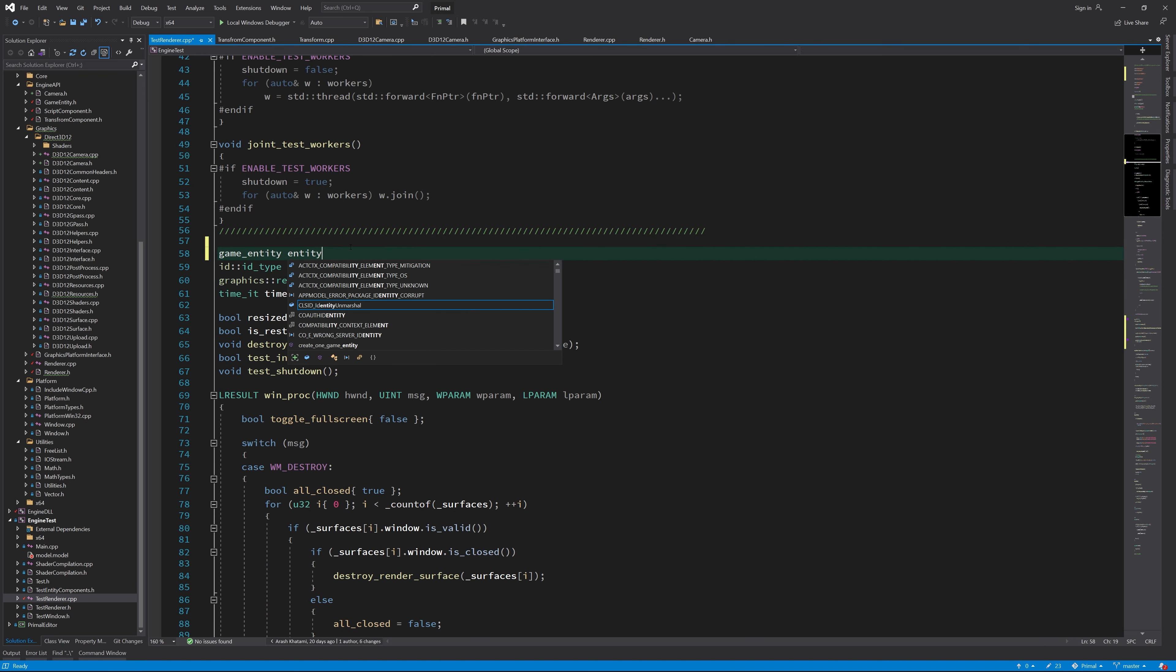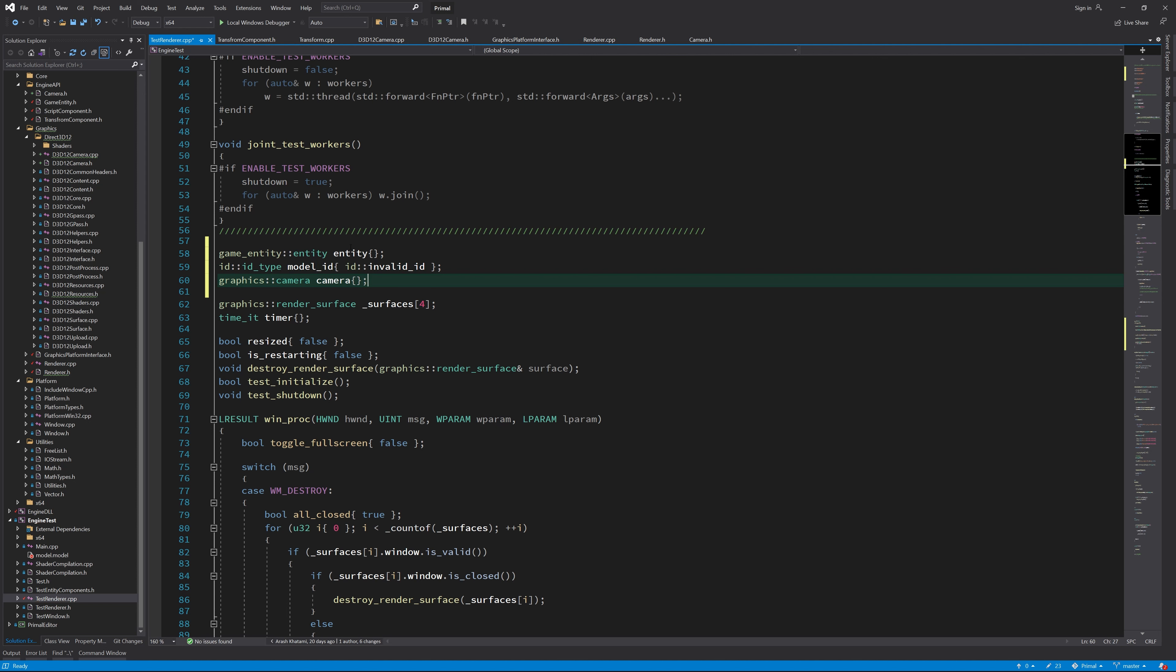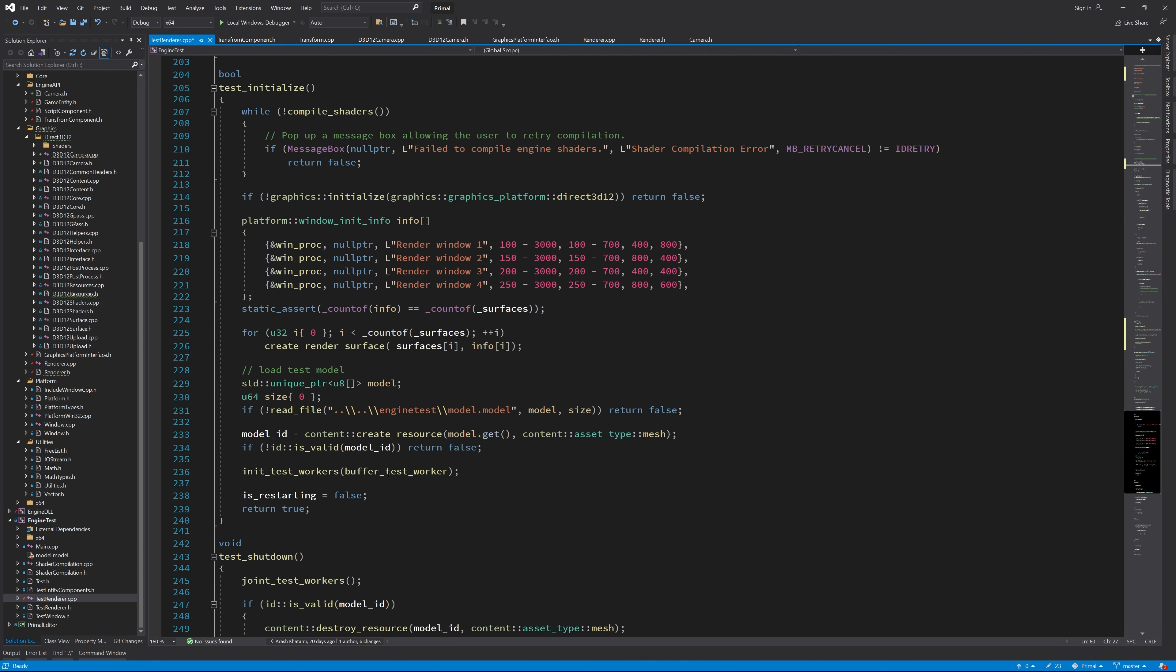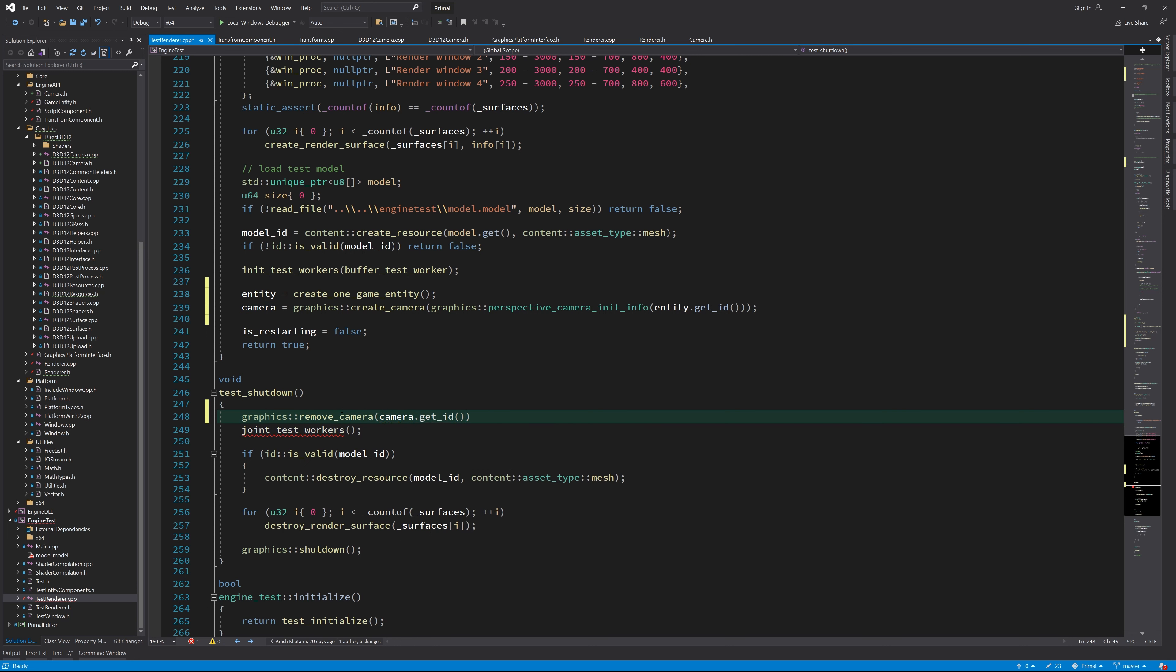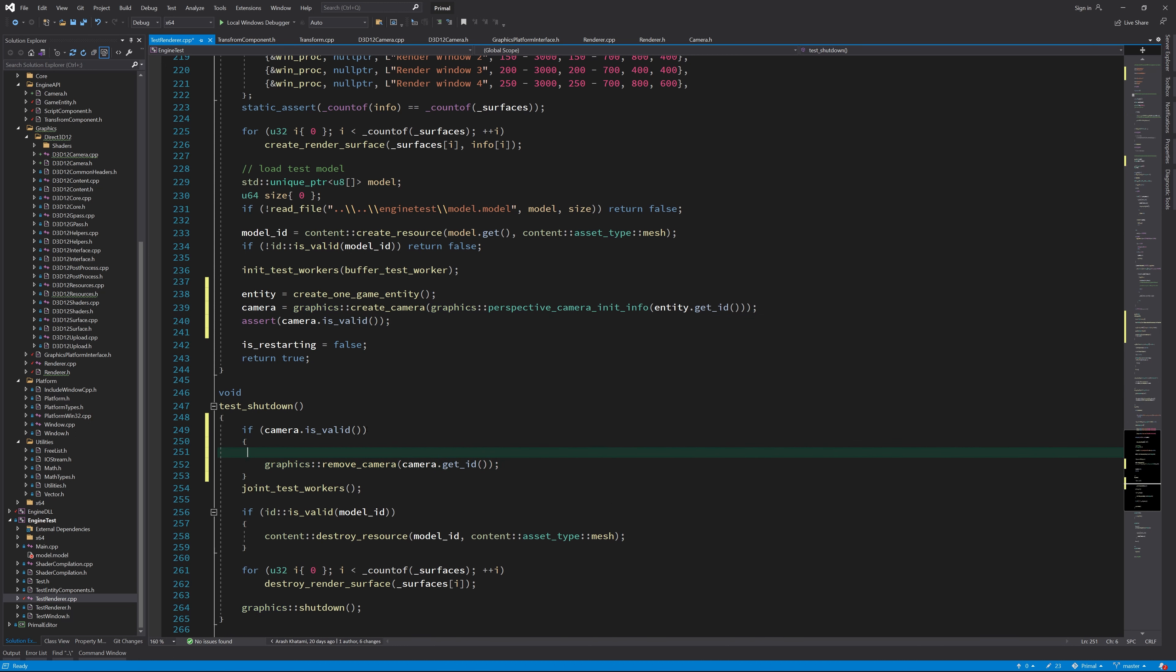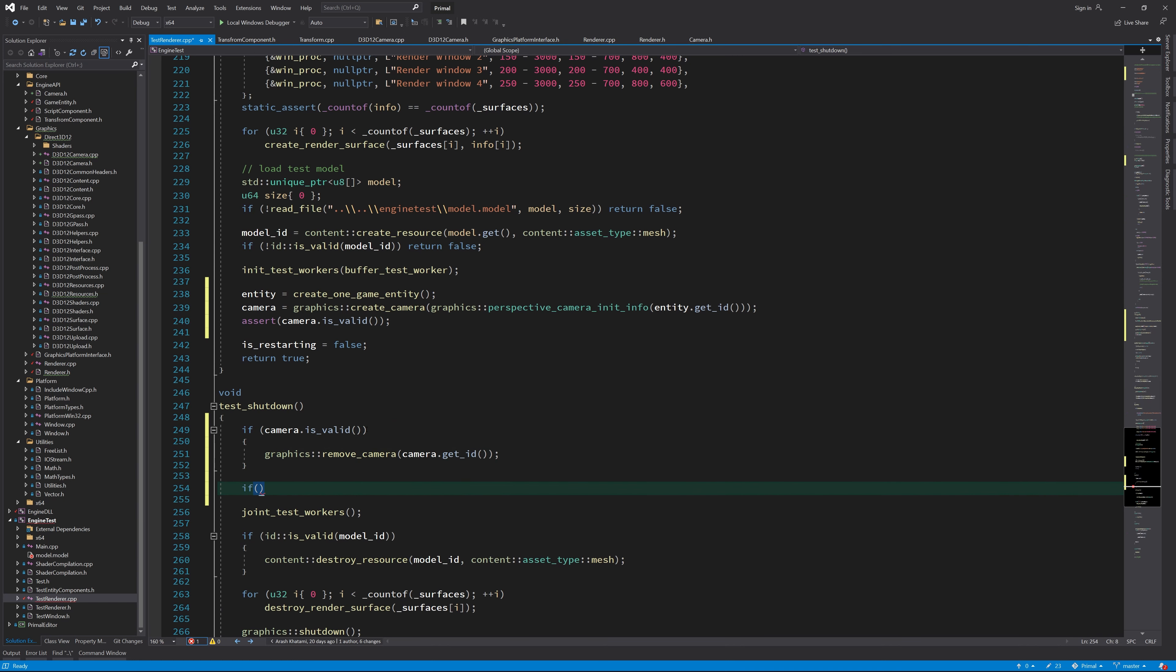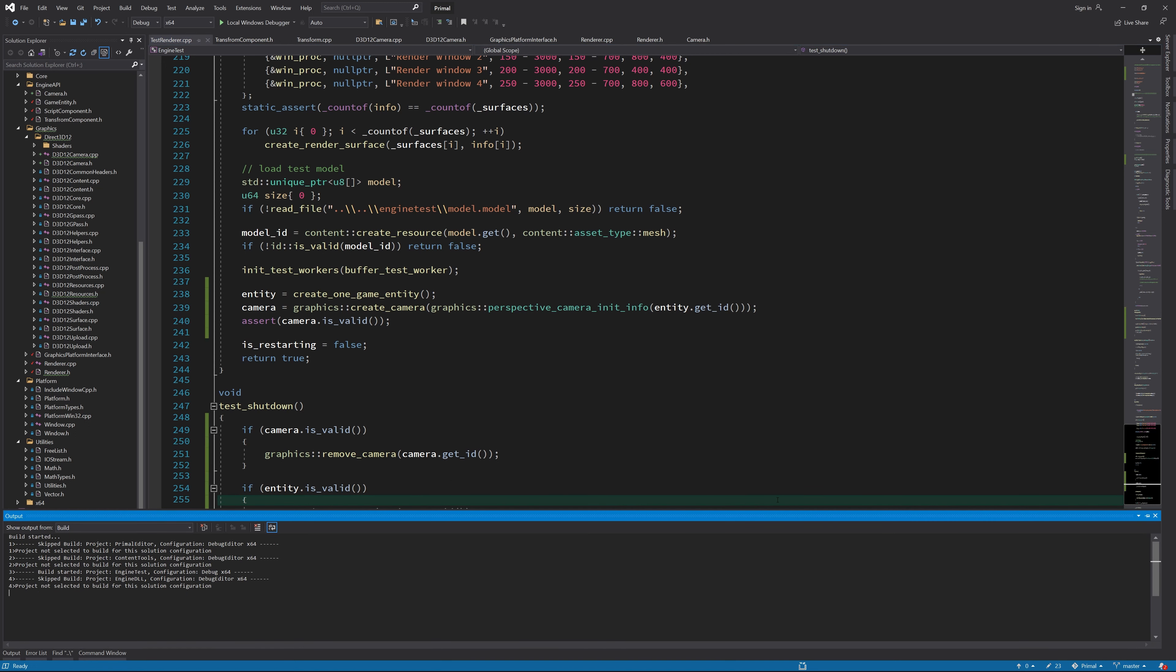Next, we copy this quaternion into transform init info's rotation field, and finally create a game entity using this transform component. We add new variables to hold the game entity as well as the camera, so that later we can remove them. Now we can call the function that we just wrote to create an entity and a camera that's associated with that entity. When we shut down the application, we remove the camera first and then we remove the entity.